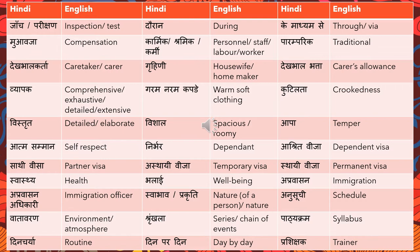Muafza means compensation. Karmic, shramic, and karmi — these are three different words with slight differences. Karmic means personnel or staff. Shramic means laborer or labor. Karmi means worker. Paramparik means traditional.